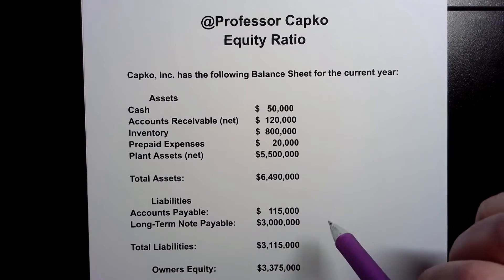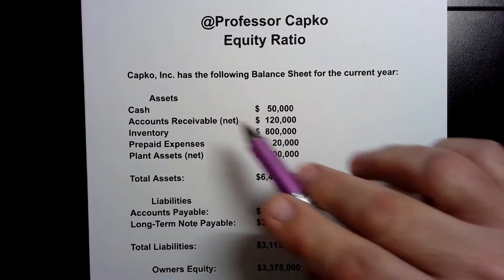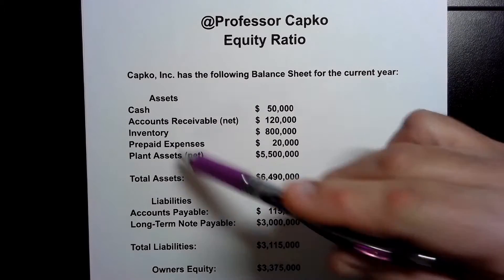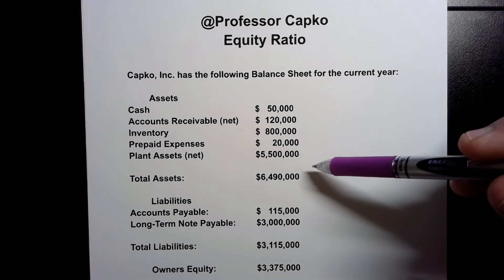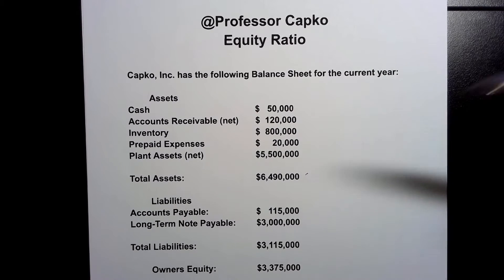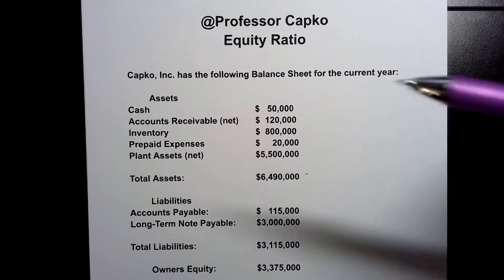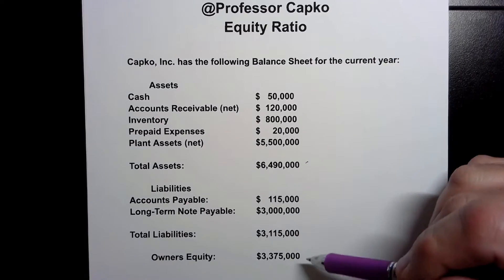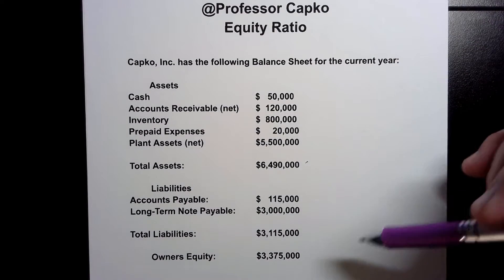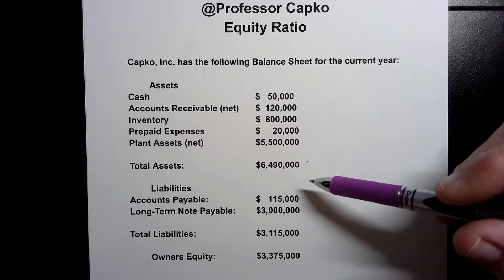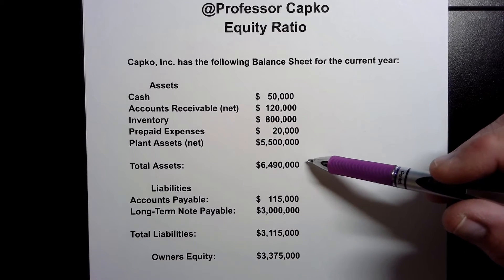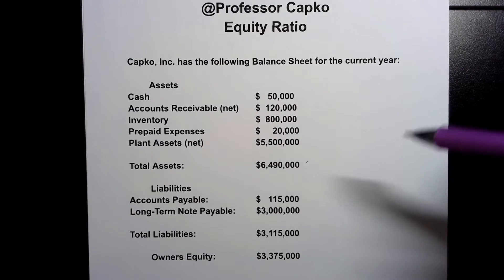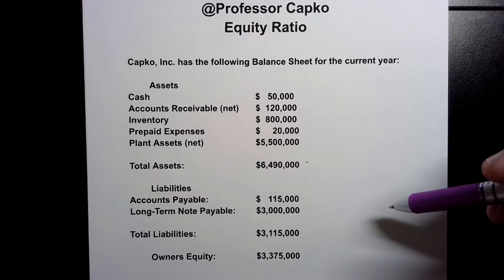This is the company that we're gonna calculate the equity ratio for — Kapko Inc — and it has the following balance sheet for the current year. I've got the assets listed here and they are totaled for us. We have the liabilities listed here and they are totaled for us. And then finally we have the owner's equity, which is what's left over when we deduct the liabilities from the assets. So it can be calculated that way in case you are not given it.